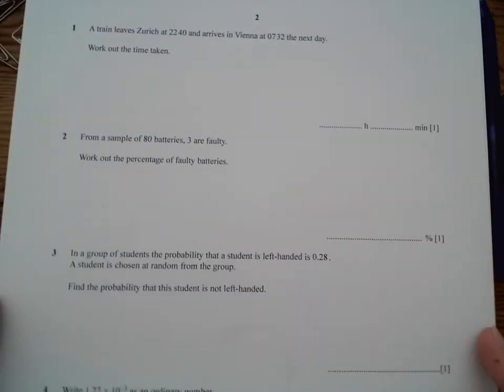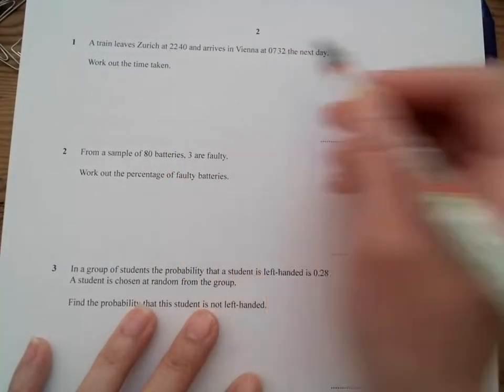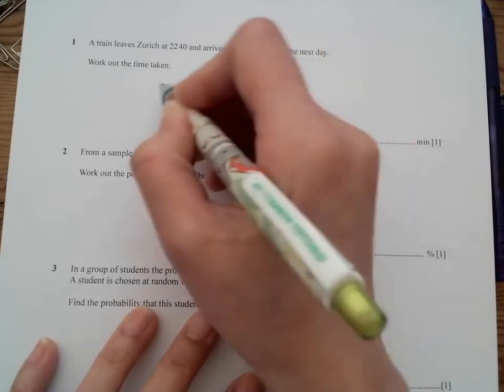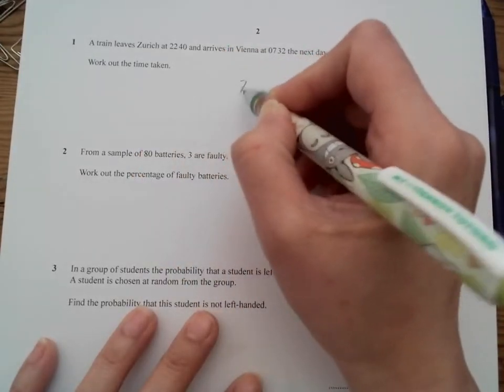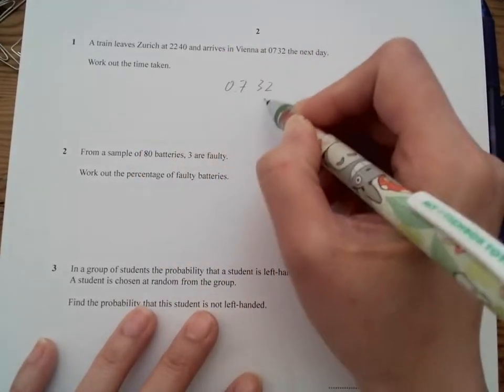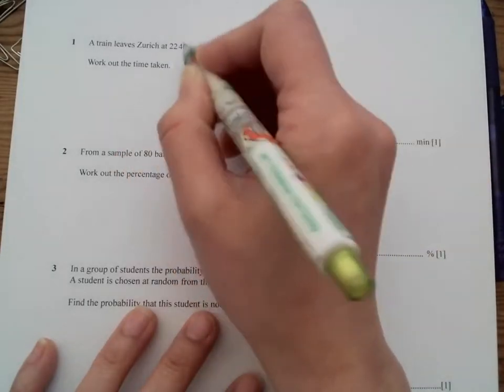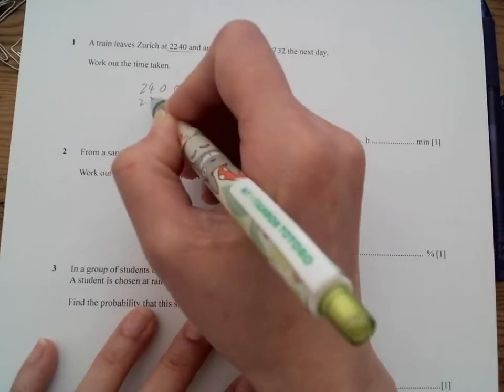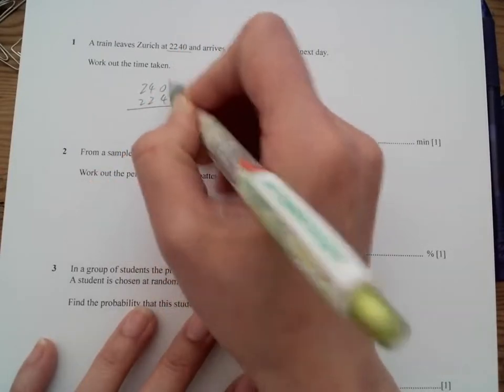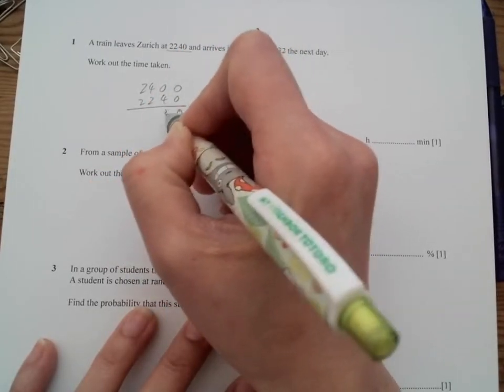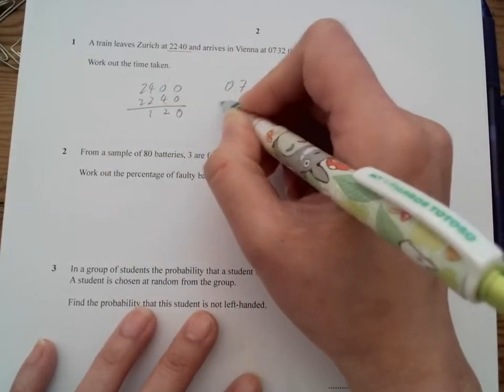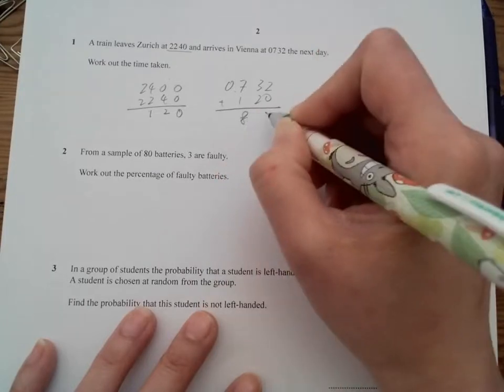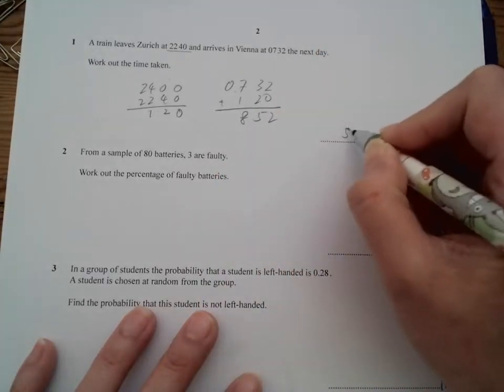First of all, a train leaves from a place to the other, find out the time taken. So what we need to do is we have 7 hours and 32 minutes on the next day, and then we need to find out how much time we take out from the previous. So 2400 minus 2240. So this is 0 and 20 minutes, and that's now one hour. So we add that to it. So we have 1 hour and 20 minutes to this place. We got 8 hours and 52 minutes, nice and easy.